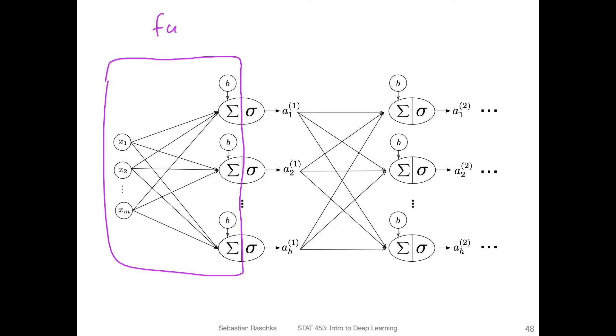You can also think of this as a fully connected layer. Sometimes people call that a dense layer. In PyTorch, it's called a linear layer because it's a linear transformation. In the context of Keras and TensorFlow, people call it a dense layer. All these things are equivalent.